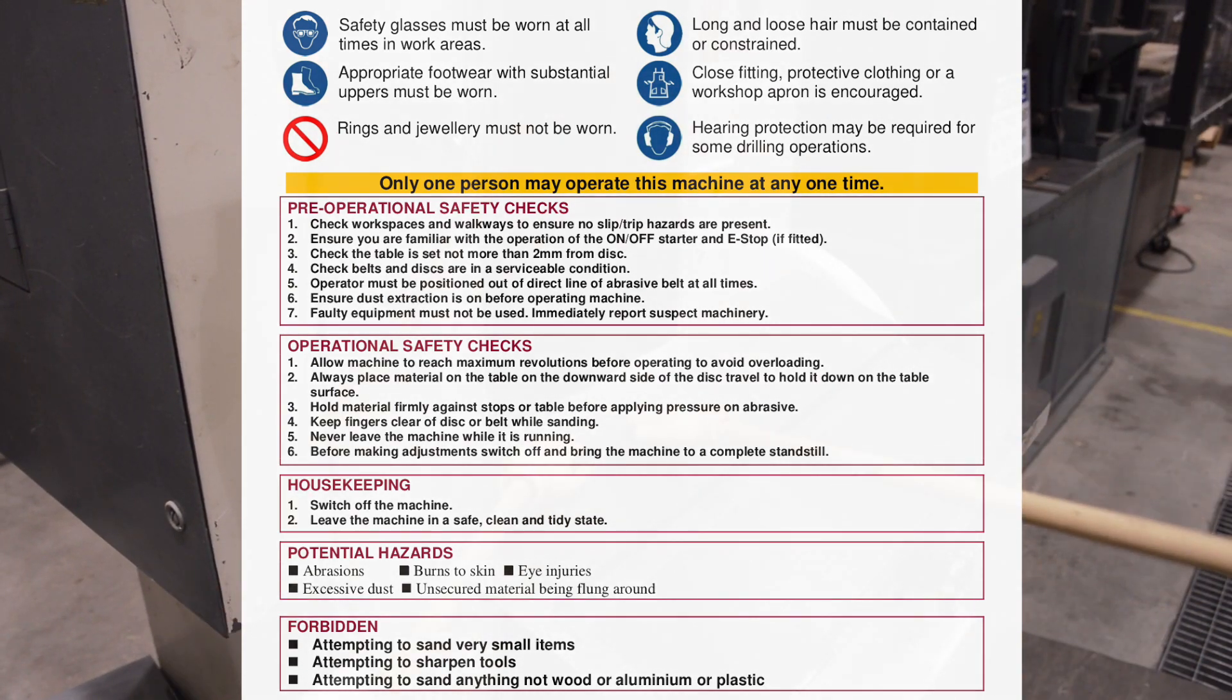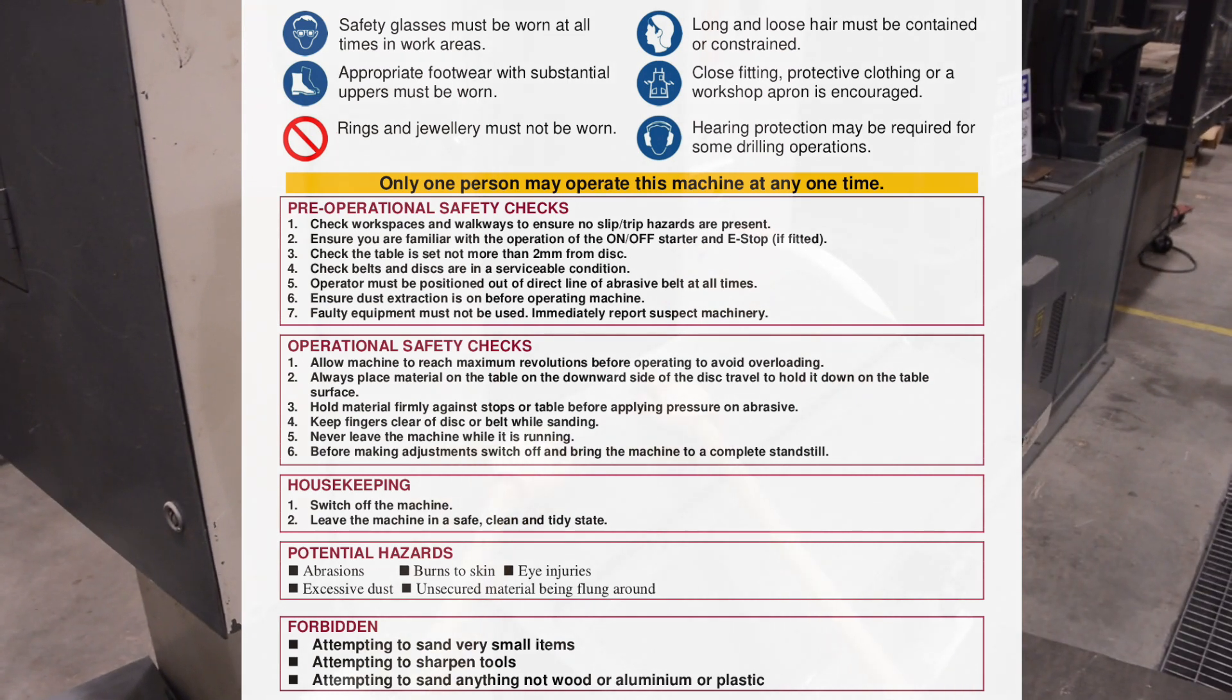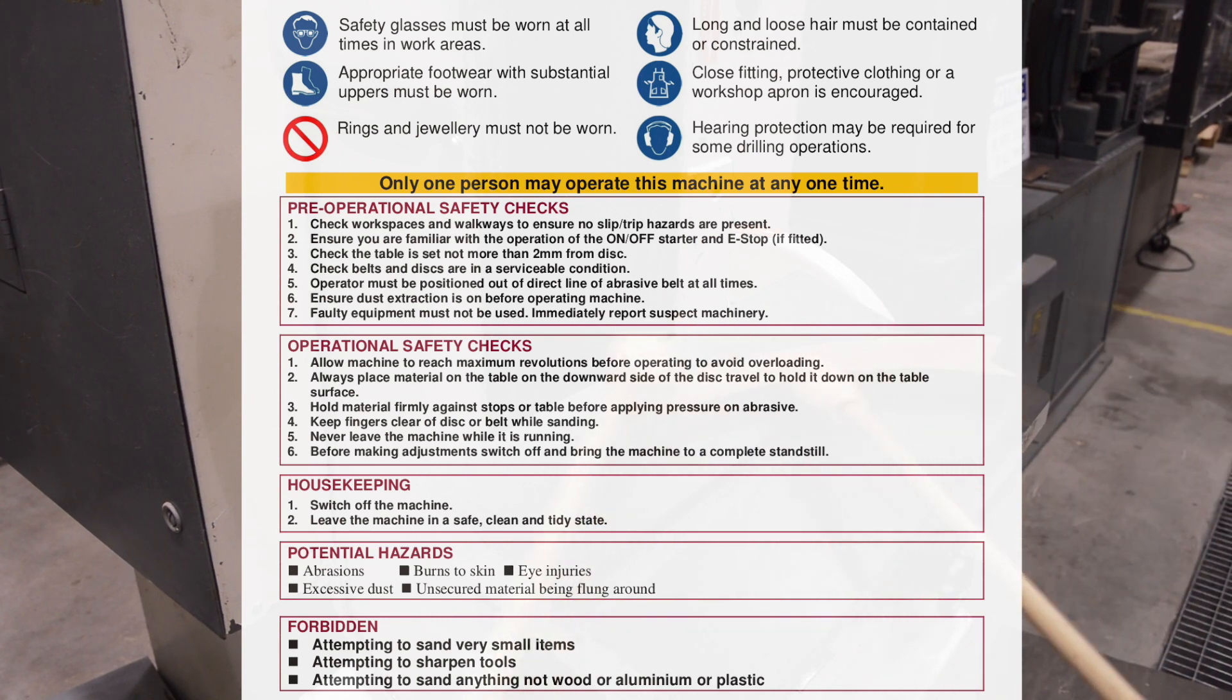For this machine, double-check that the belt has no holes or tears and that the table is no more than two millimeters away from the belt or disc. The vacuum must be connected and on as you operate the machine.